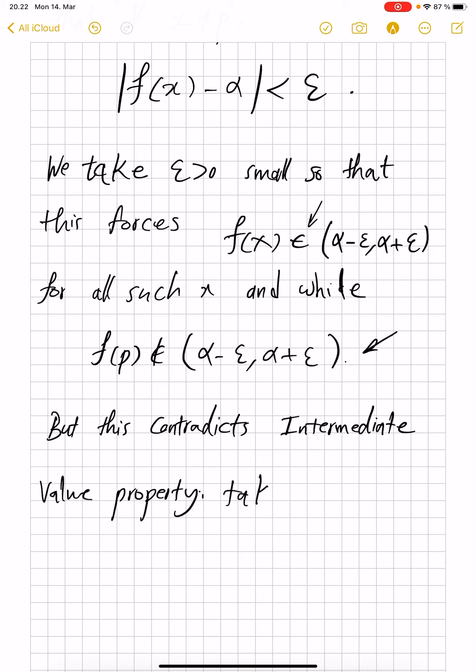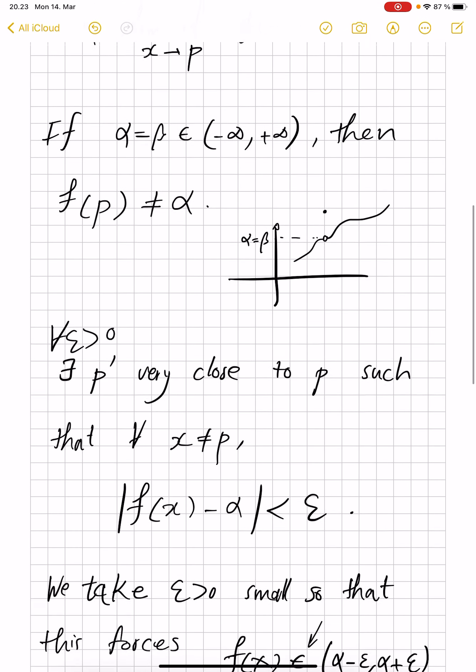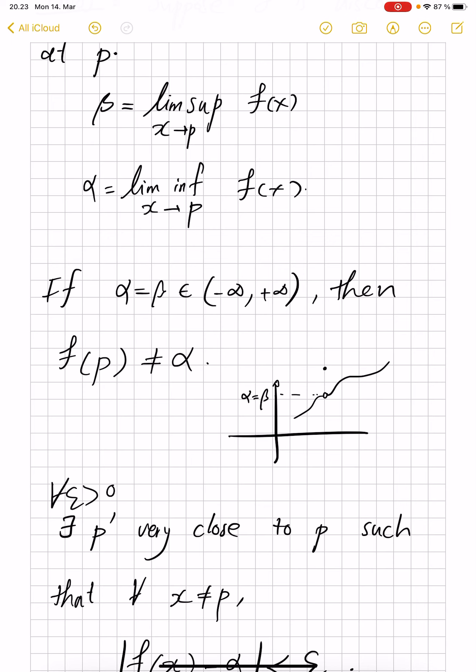How does that happen? Take some y value which is between f(p) and α, but also not in α minus ε, α plus ε. Then the neighborhood of p has no x with f(x) equal to y. And that's the failure of the intermediate value theorem. So that was the first case, that these lim sups are finite, they agree, but the value is not there.